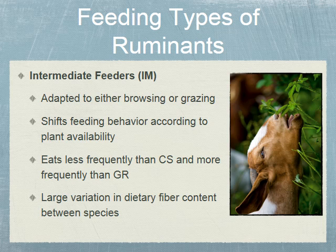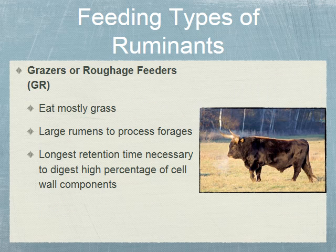The third classification of ruminants are grazers or roughage feeders. These animals eat mostly grass, have very large rumens to process forages, and retain forages for a longer period of time to digest the high percentage of cell wall components. Examples of grazers include cattle, bison, and even sheep during part of the year. These animals avoid shrubs that are high in volatile oils such as junipers, rabbit brush, and various sagebrushes — which has to do with their salivary glands.